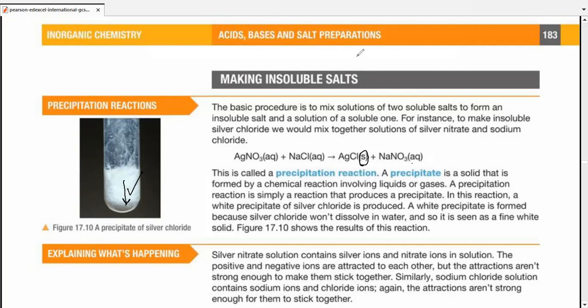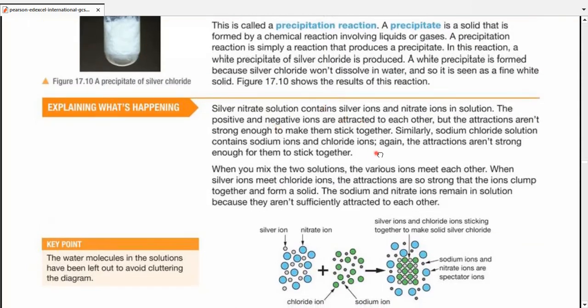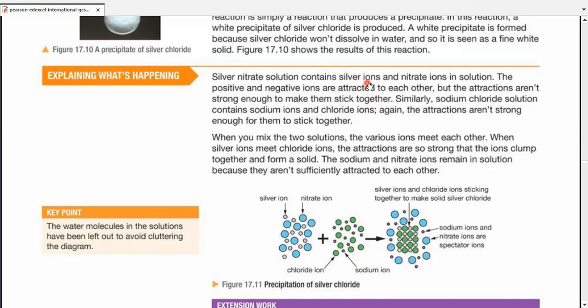Now, let's explain what's happening. Silver nitrate contains two kinds of ions: silver ions, the positive ones or cations, and the anions are nitrate ions. The positive and negative ions are attracted to each other because of their attractions, but their attractions aren't strong enough to make them stick together. Similarly, sodium chloride solution contains sodium ions and chloride ions. Again, the attractions aren't strong enough to stick them together.